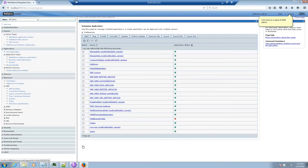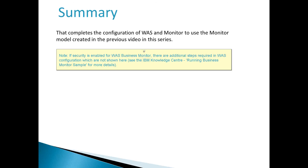Click here to log out of the WAZ Admin Console. That completes the configuration of WAZ and Monitor to use the monitor model created in the previous video in this series. Note: if security is enabled for WAZ Business Monitor, there are additional steps required in WAZ configuration which are not shown here. See the IBM Knowledge Center article on running the Business Monitor sample for more details.